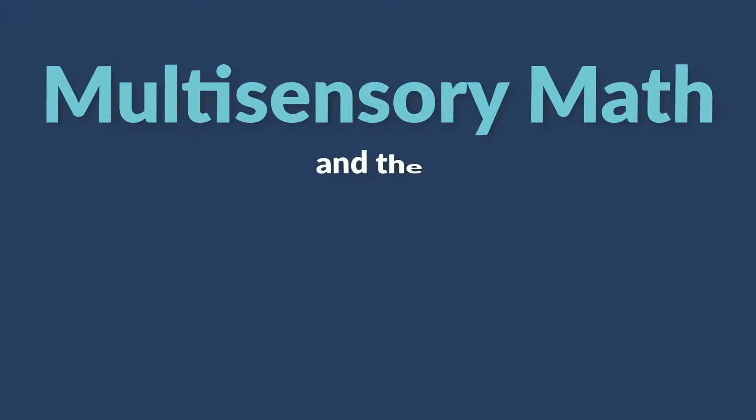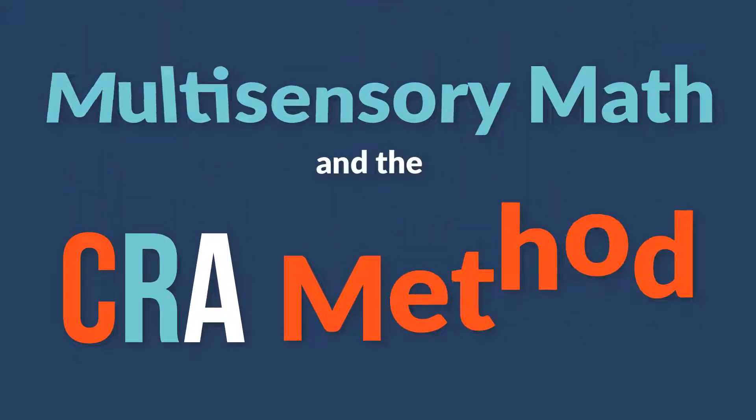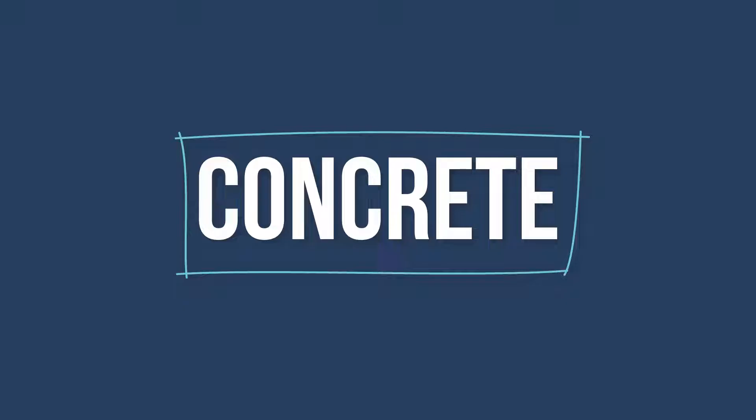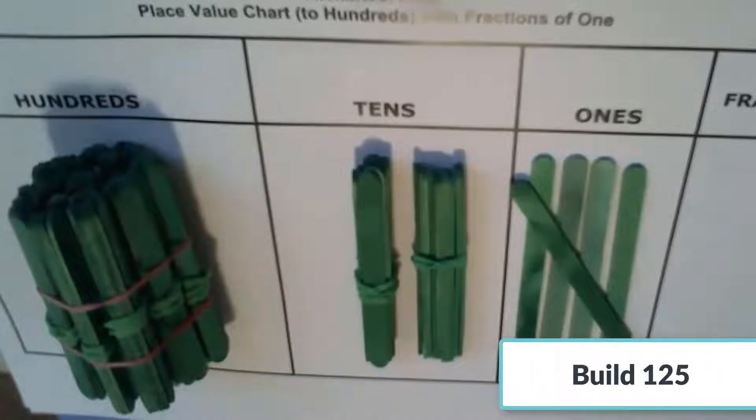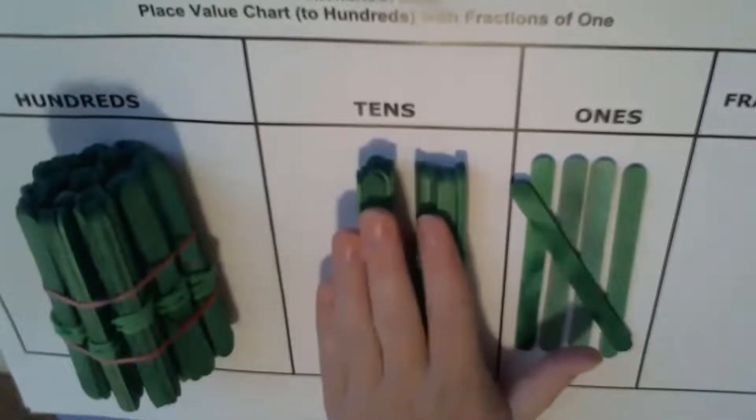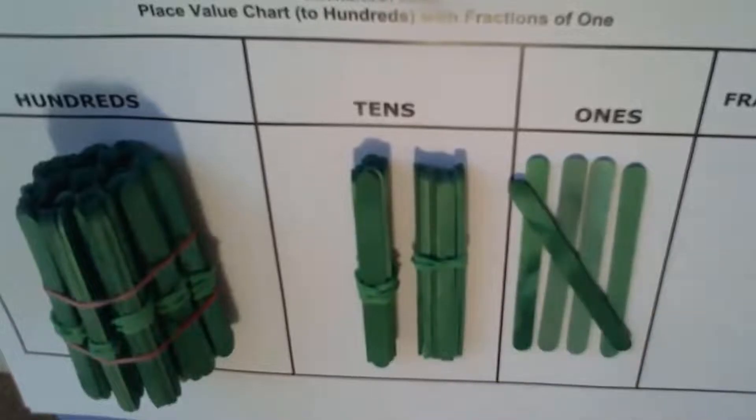Multisensory math and the CRA method. Just like in an OG reading lesson, we read quantities with our hands. In this example, we are building 125. I read it by saying: what is 125 made of? One hundred, two tens, and five ones.